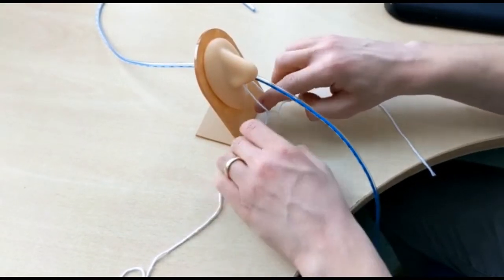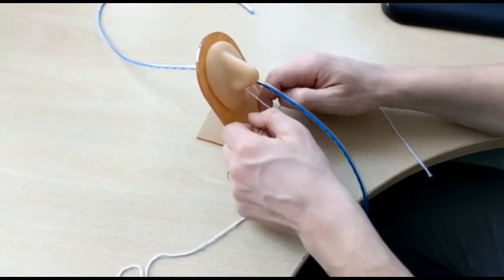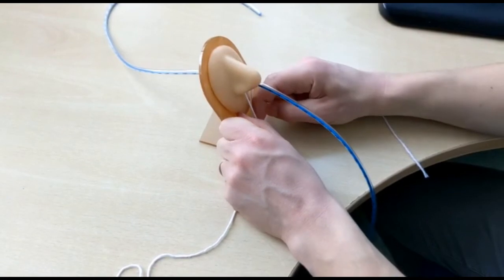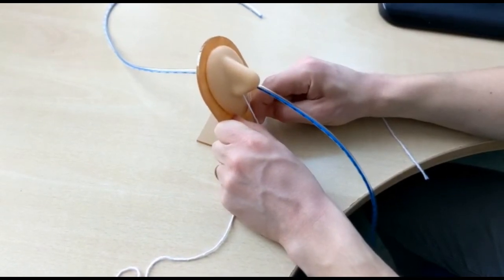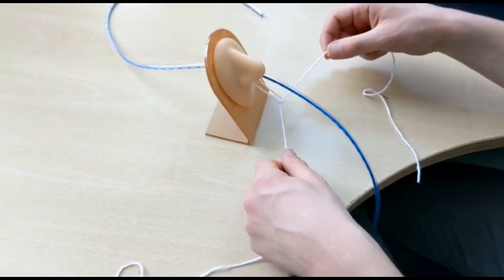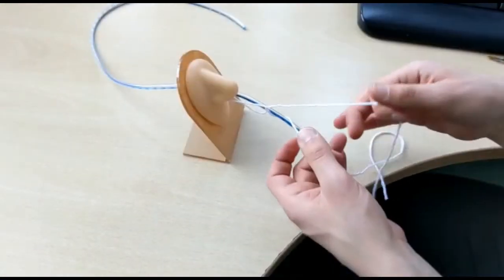Tying technique can be practiced using standard string and a model nose. The initial knot should have a good amount of slack. It is essential for there to be at least 1cm between the first knot and the philtrum to prevent pressure sores.